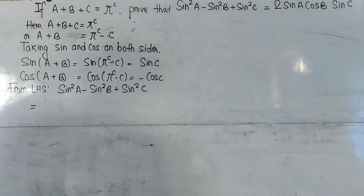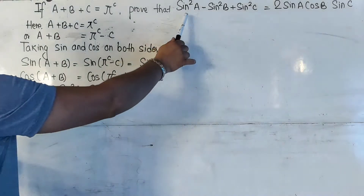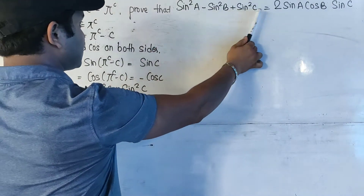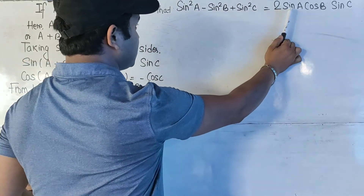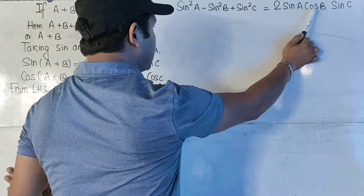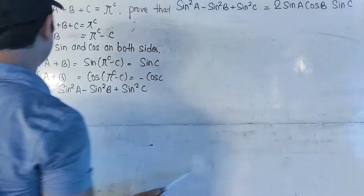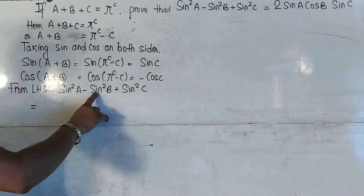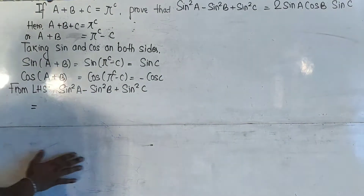We have been told to prove that sin²A - sin²B + sin²C equals 2sinA cosB sinC. We have sin²A - sin²B + sin²C.